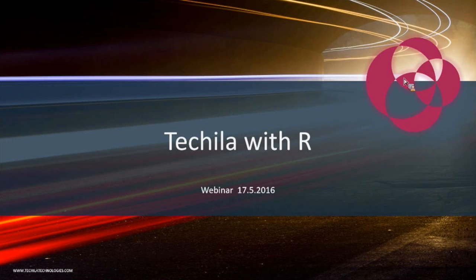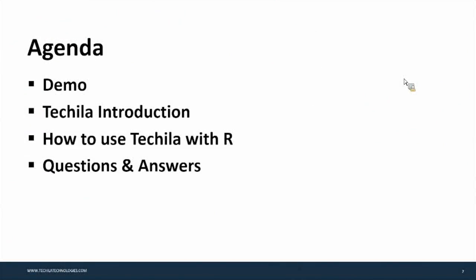Today we will be discussing how you can use the Tequila system from R, and more specifically how you can use the Tequila system in CSC's Taito cluster. The agenda for today's webinar starts with a short demo showing how you can push computation from a local R session to a Tequila environment to accelerate computations. Then I will give a brief introduction to the Tequila high-performance computing middleware system, followed by how to configure the Tequila SDK to connect to the Tequila environment in CSC's Taito cluster. After that we have time for questions and answers.